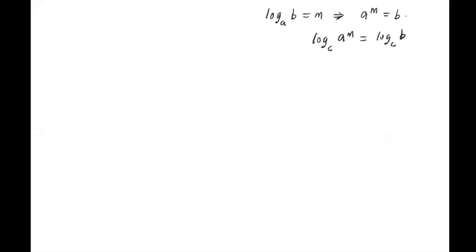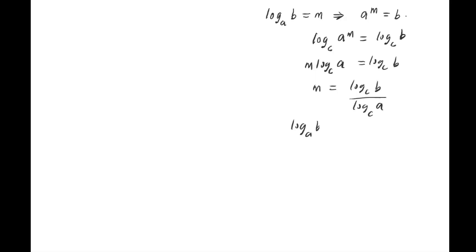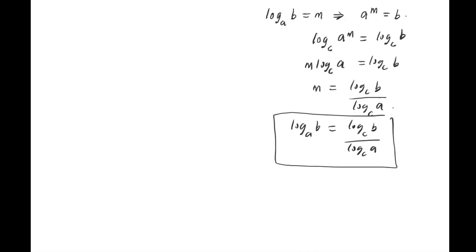Here I introduce log with a new base called base c. I bring the m down, so this is log base c of a, and this is log base c of b. Now m is log base c of b divided by log base c of a. And what is m? m is log base a of b. So log base a of b equals log_c(b) over log_c(a). This is the formula to change the base of a logarithm to a new base.